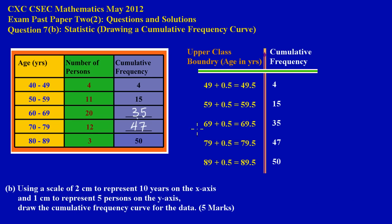In solution 7b we're going to be drawing a cumulative frequency curve, otherwise known as an ogive, based on where you are. Now in the first question in part 7a, they had asked us to fill out the table, and here I have my table because I'm going to be using the information on my table.